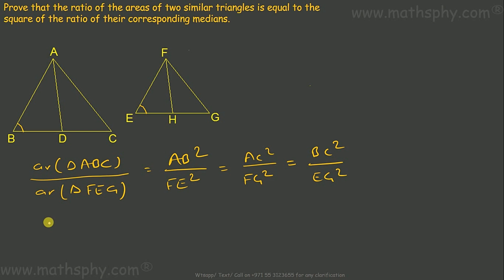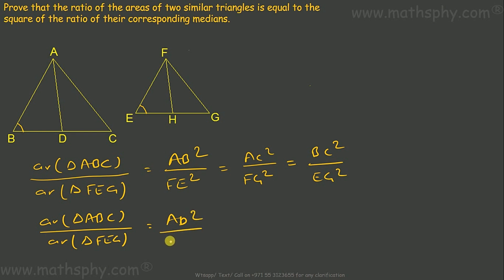So the area of triangle ABC over the area of triangle FEG is equal to AD² over FH². This proves that the ratio of the areas of the two similar triangles is equal to the square of the ratio of their corresponding medians.